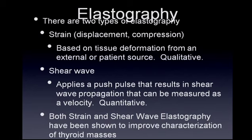There are two types of elastography. One is strain, which you may have heard as displacement or compression. This is based on tissue deformation from an external or patient source and is a qualitative technique. There is also a second type called shear wave, in which a push pulse, or a low frequency, high energy pulse, results in shear wave propagation perpendicular to the push pulse that can be measured as a velocity. This is a quantitative method.